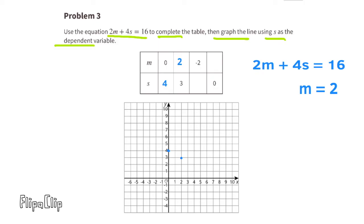Let's do the next one in the table. The value for M is negative 2, so we'll substitute the M with the negative 2. 2 times negative 2 is negative 4. Let's add 4 to both sides of the equal sign. That gets rid of the negative 4, so we have 4S equals 20. Divide both terms by 4. 4S divided by 4 is 1S, and 20 divided by 4 is 5. So when the value for M is negative 2, the value for S is 5.